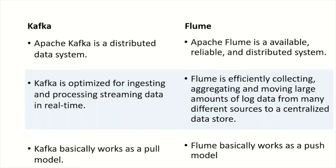Kafka is optimized for ingesting and processing streaming data in real time, whereas Flume is efficient at collecting, aggregating, and moving large amounts of log data from many different sources to a centralized data store. This is a major difference — Kafka is more about ingesting and processing real-time data, whereas Flume collects data from different sources and stores it in a centralized data store.